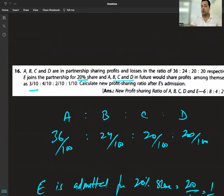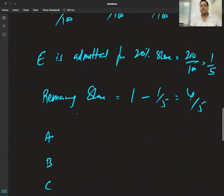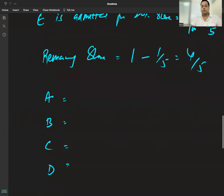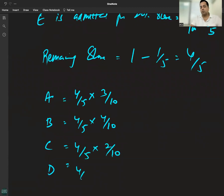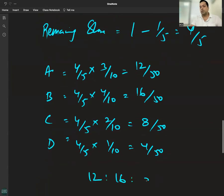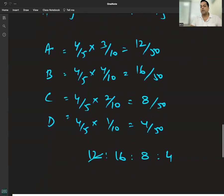The ratio is 3:4:2:1. The remaining share is 4 by 5. Multiply: 4 times 3 is 12, 4 times 4 is 16, 4 times 2 is 8, 4 times 1 is 4. So we have 12:16:8:4.